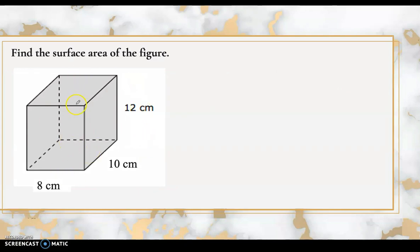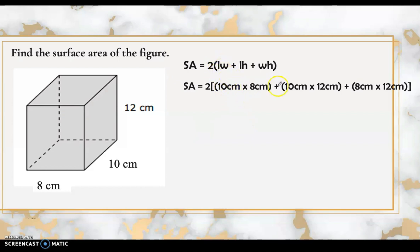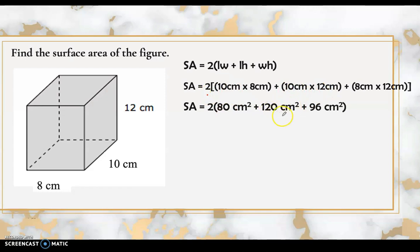Next, find the surface area of this figure. Using the formula, the length is 10 centimeters, the width is 8 centimeters, and the height is 12 centimeters. Substituting: length times width is 80 square centimeters, length times height is 120 square centimeters, and width times height is 96 square centimeters. Adding these three: 80 plus 120 plus 96 equals 296. Multiplying by 2, the surface area of this prism is 592 square centimeters.